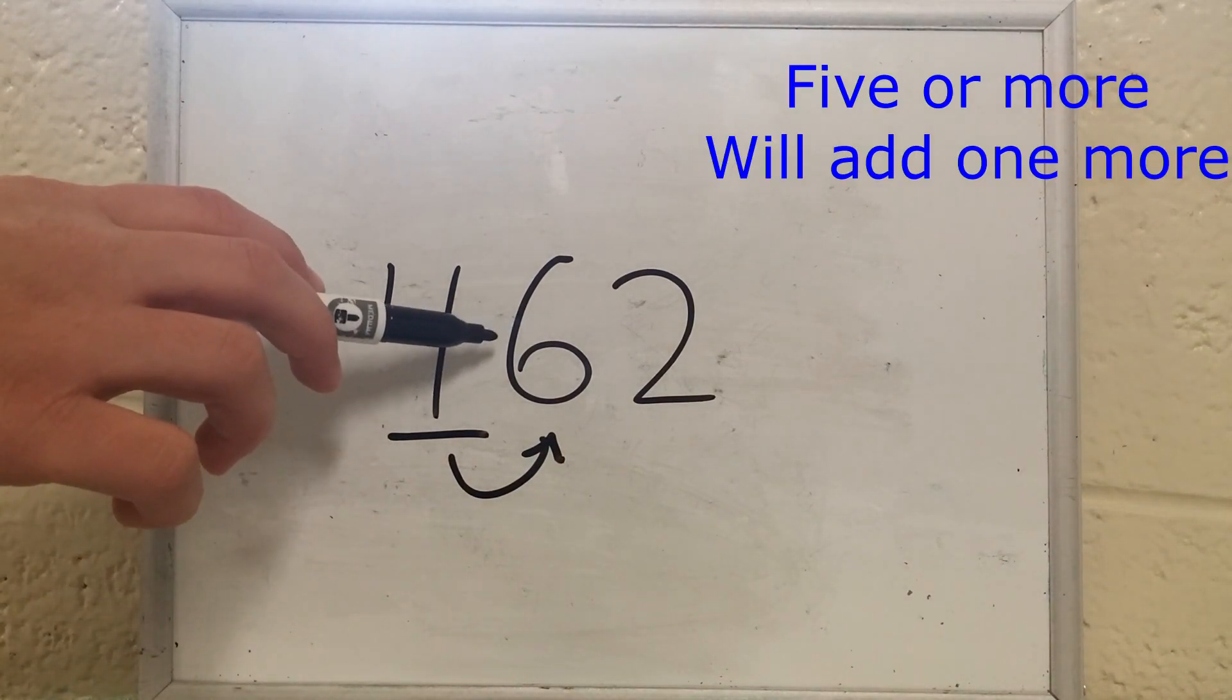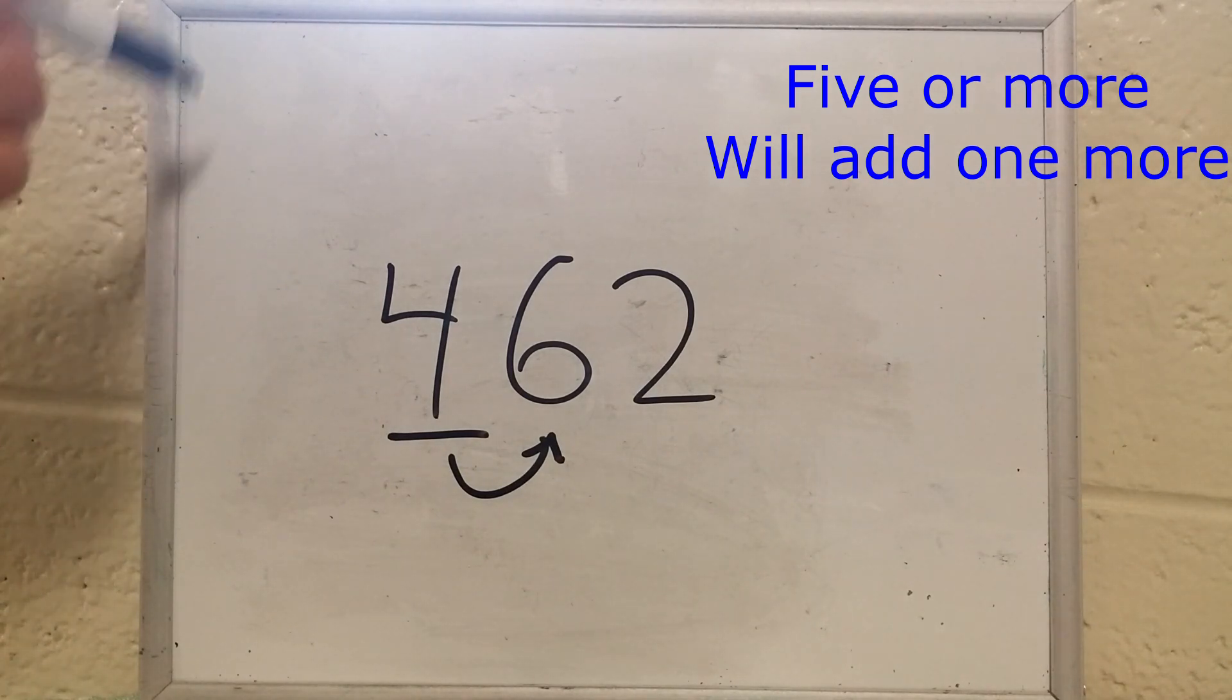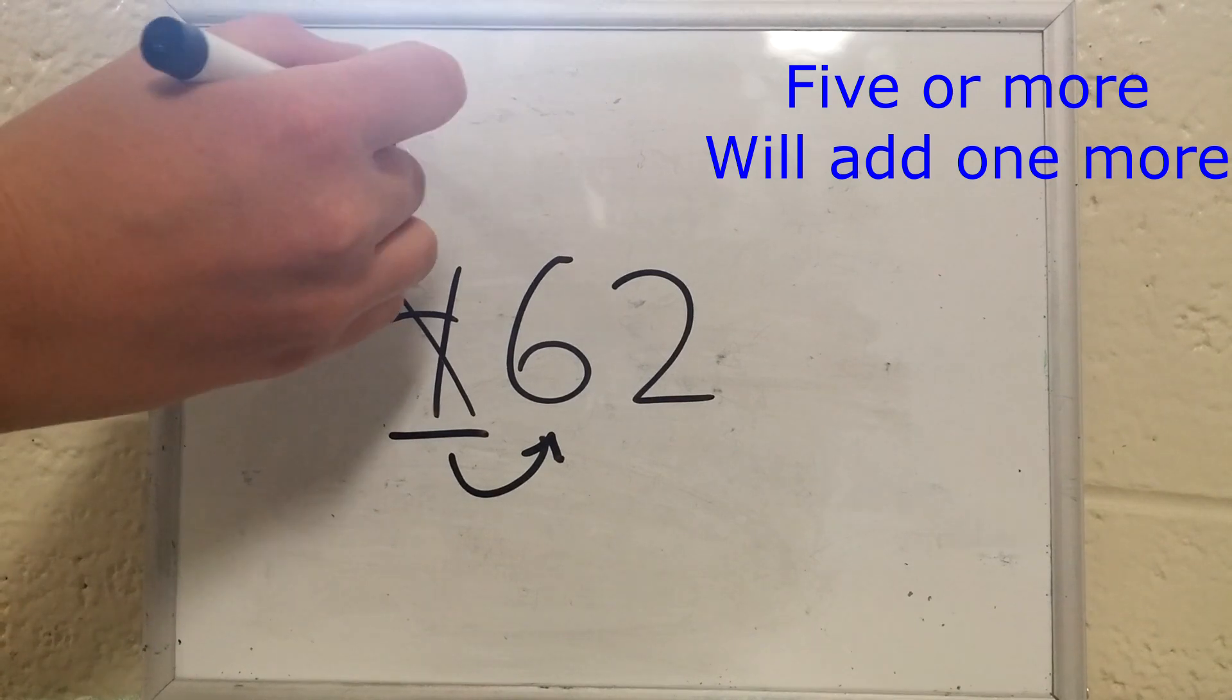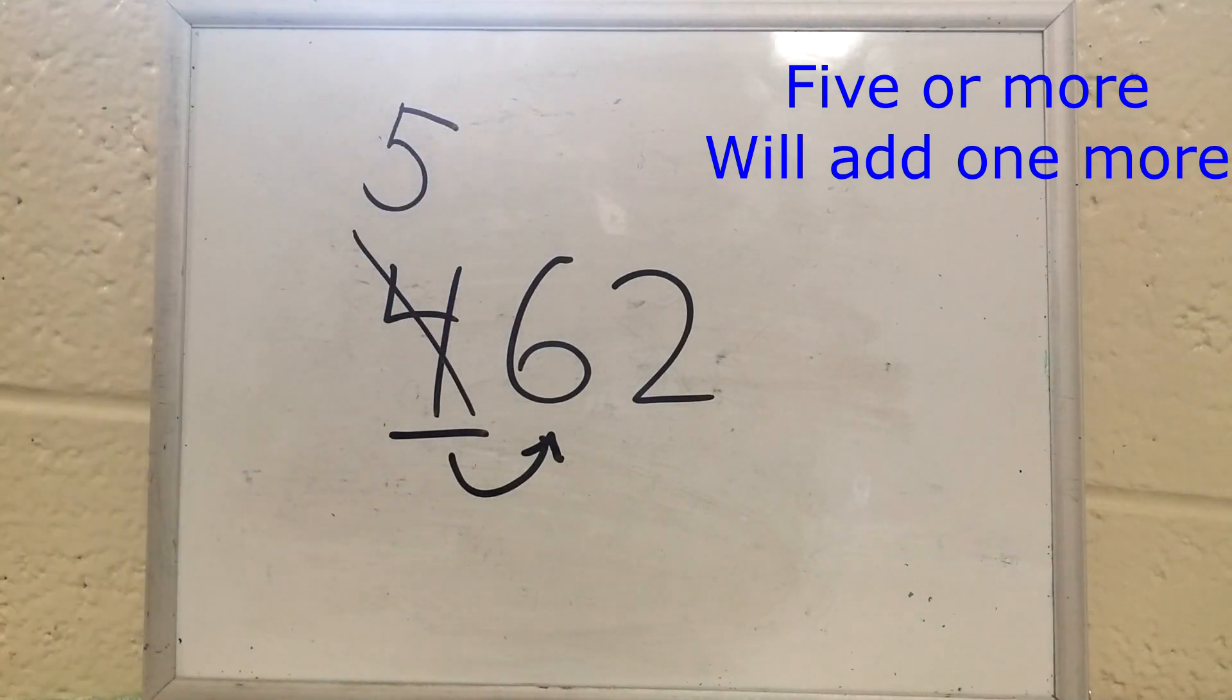Five or more, we'll add one more. Six is greater than five, so we're going to add one more, but to the spot we marked this time. Four plus one equals five, so we'll write a five above it.